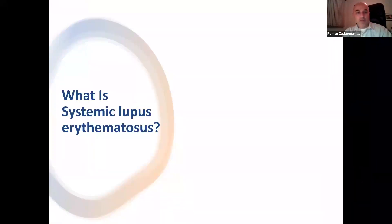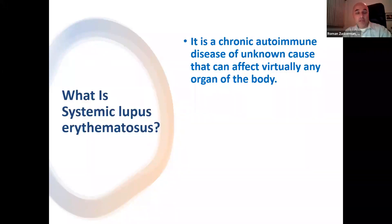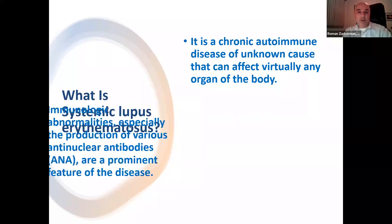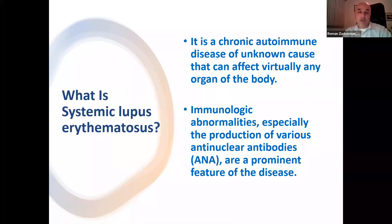What is systemic lupus erythematosus? It's a chronic autoimmune condition. We don't know what causes it or what triggers the onset of this disease, but it can manifest within any organ in our body. It's quite complex and can vary in its severity. There are various immunologic abnormalities, including production of autoantibodies called anti-nuclear antibodies, which are present essentially in everyone diagnosed with lupus.